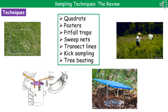Sweepnets, in the top right, are used to catch things like grasshoppers or butterflies. Transect lines will be where we're studying up a beach or from a tree going out into a field. Kick sampling is what we'll do in rivers in order to see what's actually on the riverbed. And tree beating is where we're going to hold a big white sheet under a tree and shake it in order to see what falls out.